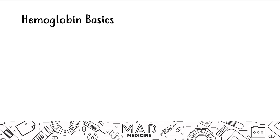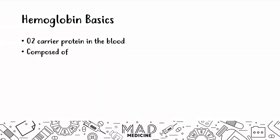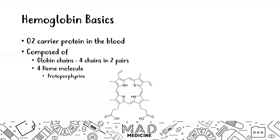The basic things you need to know about hemoglobin is that it is a carrier protein for oxygen located in the blood. It's found in our red blood cells and it's composed of globin chains — four chains in two pairs — and four heme molecules as well. Heme consists of protoporphyrins and iron; when iron combines with protoporphyrin you get a heme molecule.